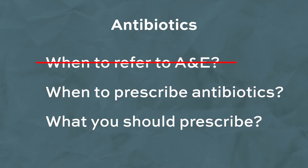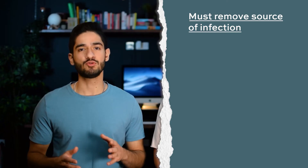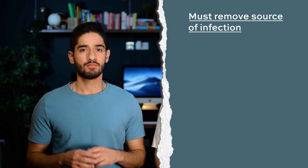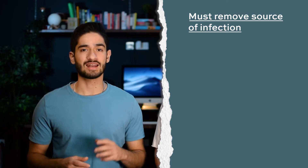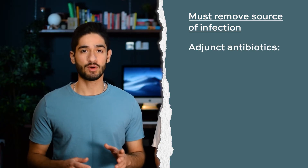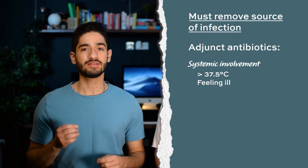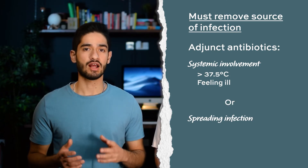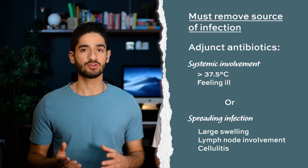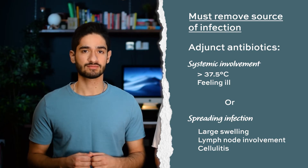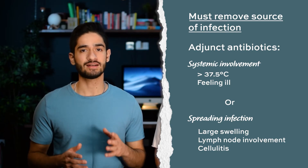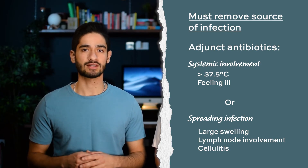If the patient doesn't need to go to A&E, when would you prescribe antibiotics for acute, chronic, or periodontal abscesses? Most of the time, removing the source of the infection can be enough, but you should prescribe antibiotics as an adjunct treatment when there is systemic involvement — like a high temperature or malaise — and when the infection is spreading, for example a large swelling, lymph node involvement, or cellulitis. In all of these cases, you should try to establish drainage and also prescribe antibiotics.